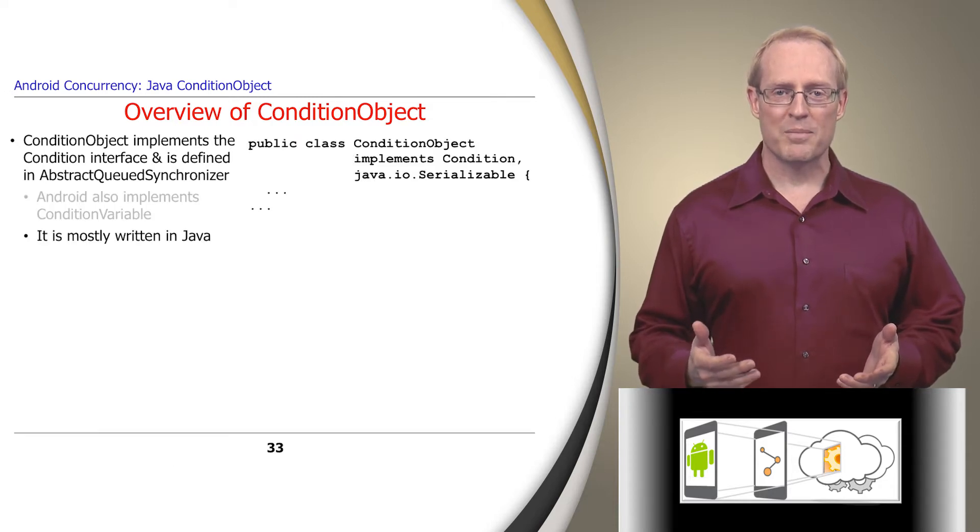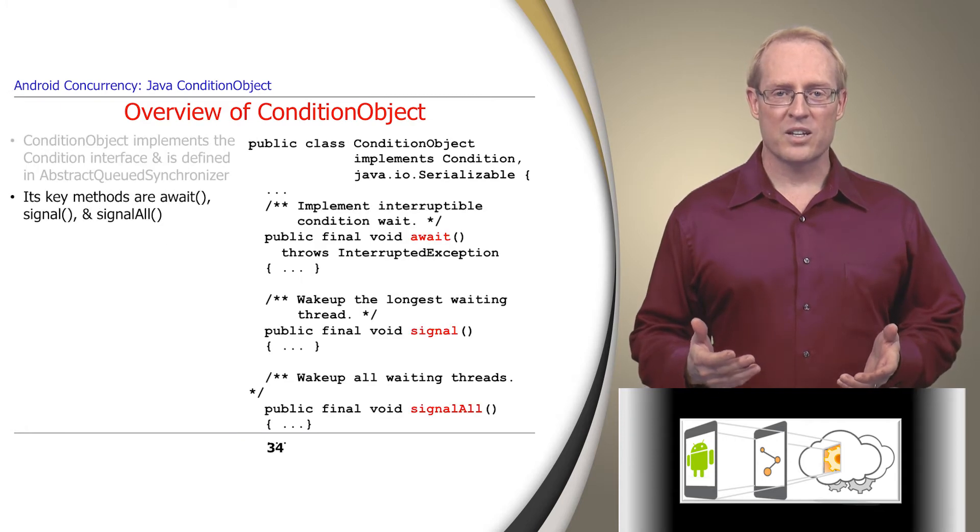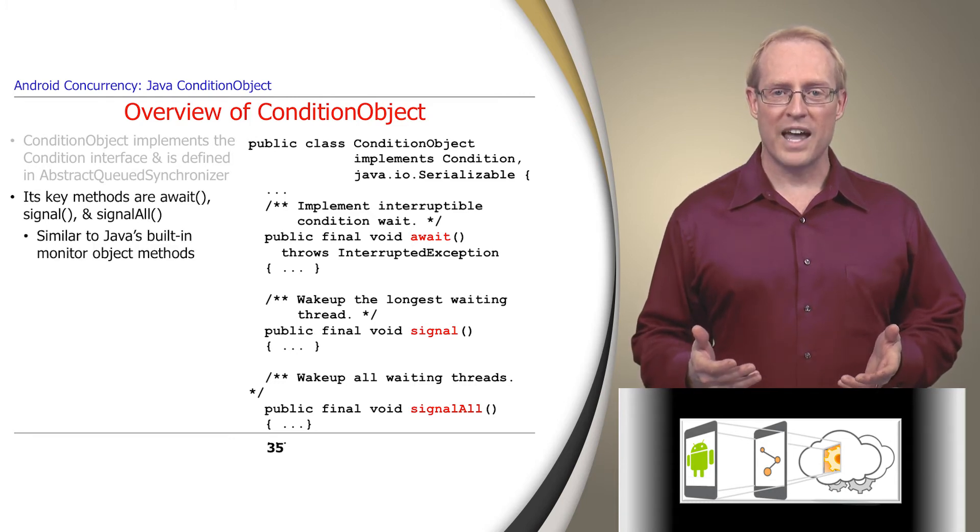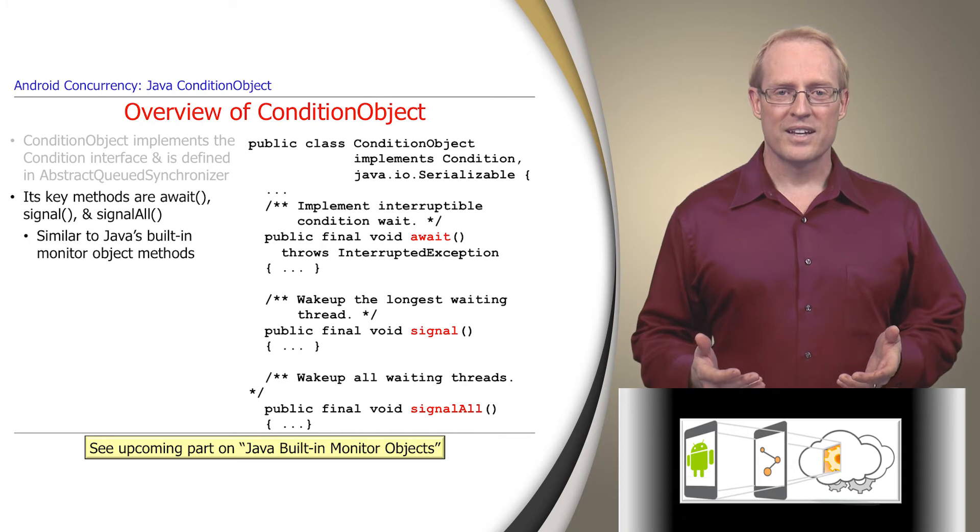Condition object is mostly implemented in Java, as shown at this path name. The key methods in a condition object are await, signal, and signal all, which are named to align with the wait, notify, and notify all methods provided by Java's built-in monitor objects, though their implementations differ, as we'll cover later in the module.